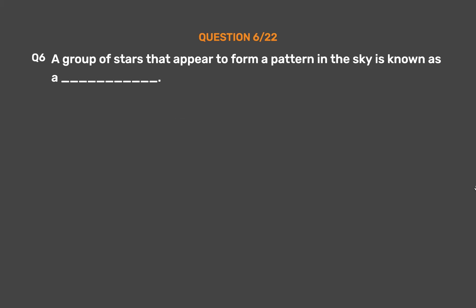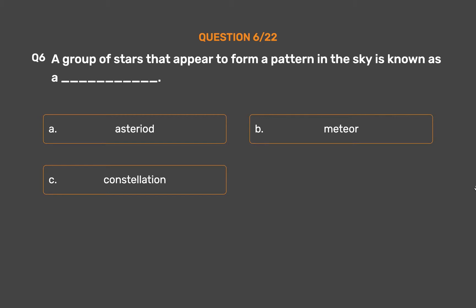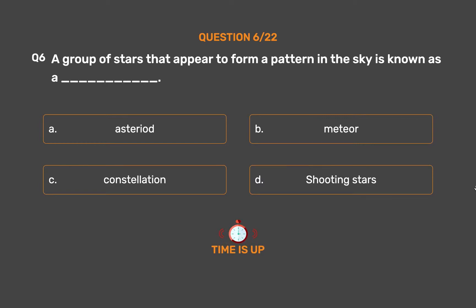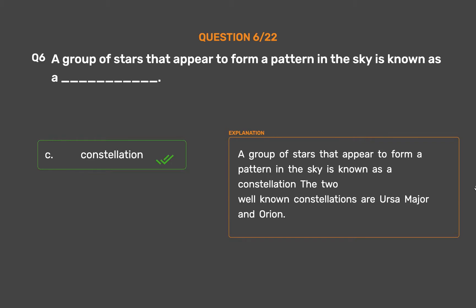Question number 6. A group of stars that appear to form a pattern in the sky is known as: Option A: Asteroid. Option B: Meteor. Option C: Constellation. Option D: Shooting stars. The correct answer is Option C: Constellation. A group of stars that appear to form a pattern in the sky is known as a constellation. The two well-known constellations are Ursa Major and Orion.